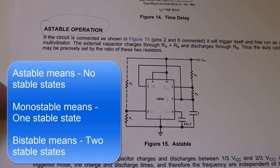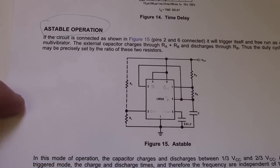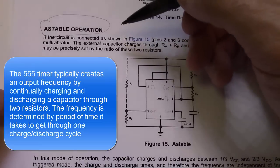Astable operation - there are two primary ways you can operate the 555 timer. One is called monostable, which means you need to trigger it to get an output pulse. Astable means there is no stable mode - it continually generates an output by charging and discharging a capacitor. There's a certain period of time that the circuit is high and a certain period of time it's low.